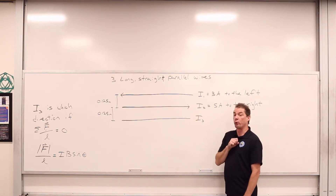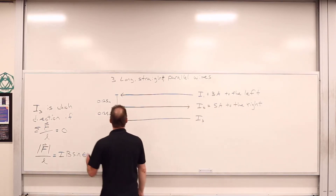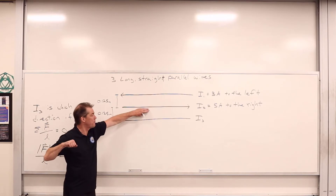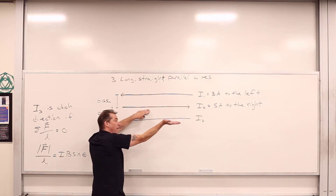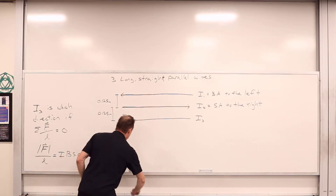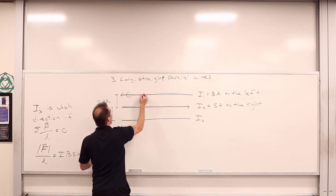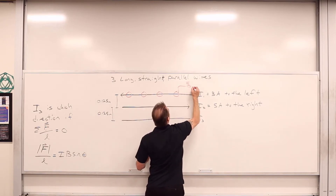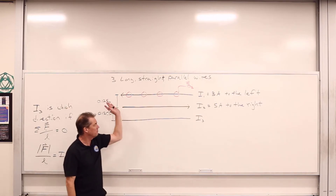I2 produces a magnetic field locally. Looking at the direction of the magnetic field that it produces along current carrying wire number one: the magnetic field produced by I2 — well, I2 goes that way, and we're looking up above it. So I crossed into R gives us the direction of B, which is out of the board. All across this I1, we have B2 which is out of the board. That is the magnetic field due to I2 along I1.